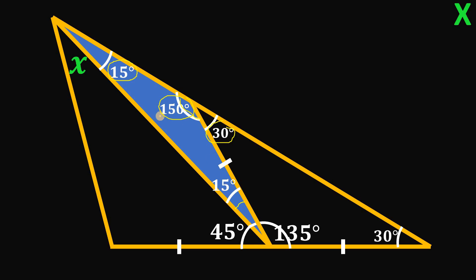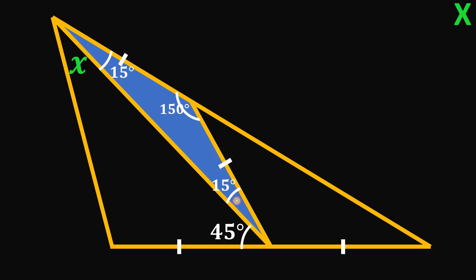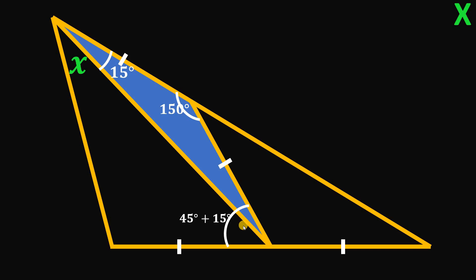Let's take away the angles we don't need: the 30 degrees, 135 degrees, and the other 30 degrees. Now notice we can combine this 15-degree angle and this 45-degree angle: 45 plus 15 equals 60 degrees. So we know this combined angle right over here has a total of 60 degrees.